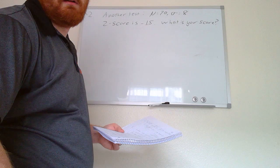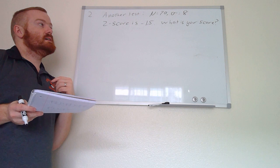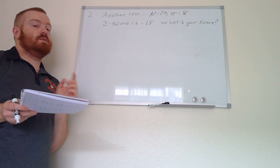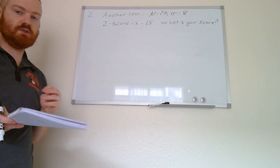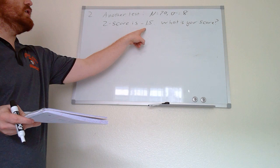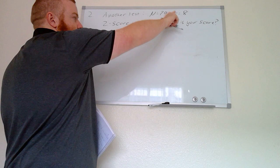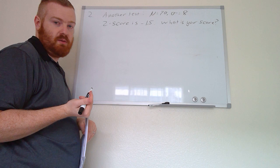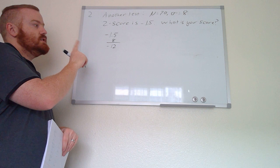For the next example: μ = 70 and σ = 8. The z-score for your test was −1.5, meaning you scored one and a half standard deviations below the average. We want to find your actual score. One straightforward method: multiply the z-score by the standard deviation — (−1.5) × 8 = −12 — so you're 12 points below the mean.